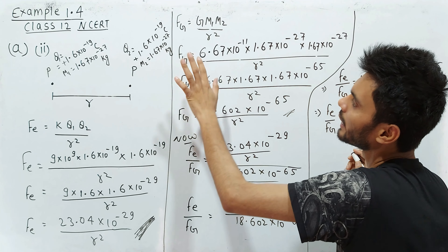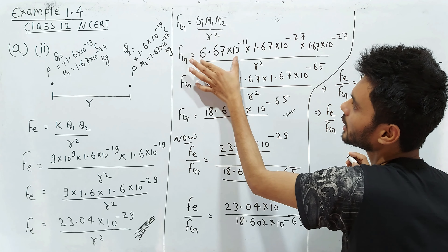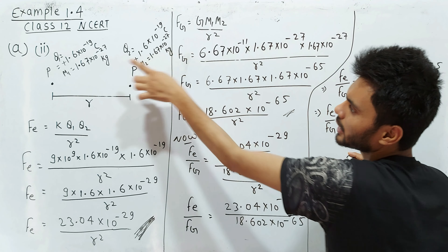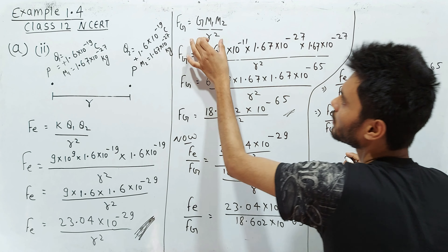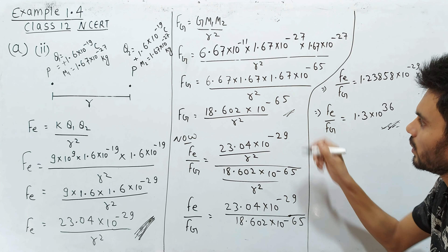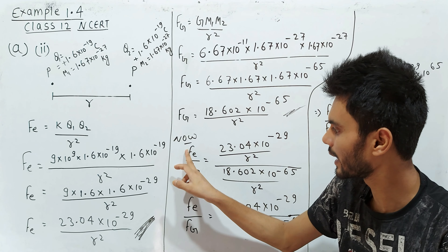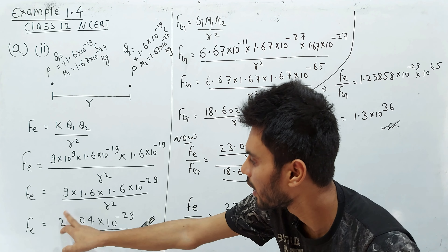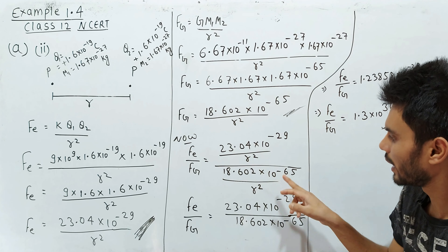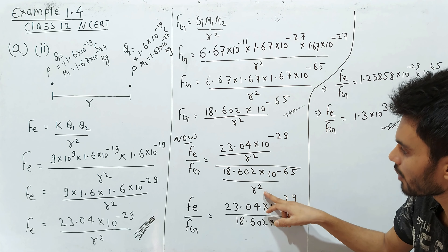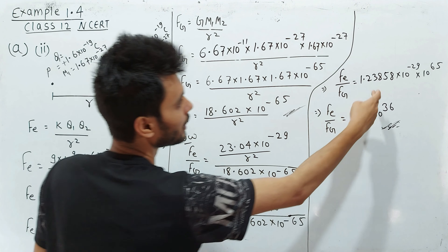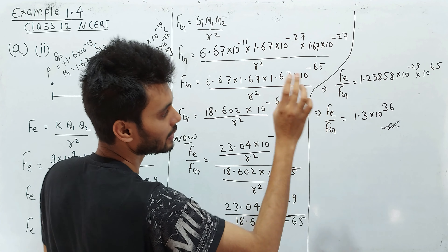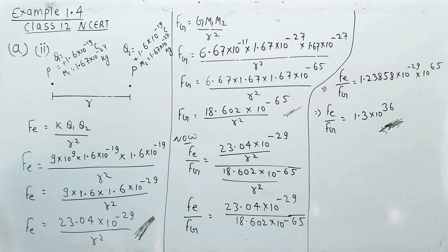Now we calculate the gravitational force between the two protons: Fg = G·m1·m2 / r², where m1 and m2 are both the mass of a proton and the distance r is assumed since it is not given. After solving, we divide the electric force by the gravitational force. The r² terms cancel, and the final ratio Fe/Fg for two protons is obtained. Please take a screenshot of this result.